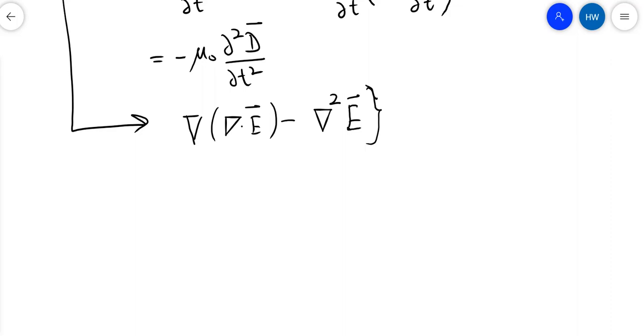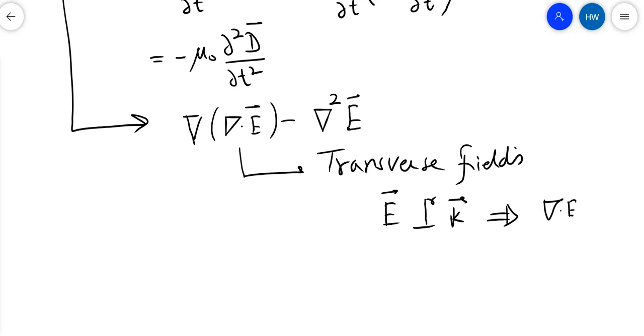Now I make another assumption which is I'm looking at transverse fields. What that means is I'm basically going to focus on fields that are propagating, and I'm looking at essentially homogeneous medium. So the electric field vector is perpendicular to the k vector. If you look at the plane wave basis, you can clearly see that del dot E will bring down a k dot E, and because these are perpendicular, you will see that this implies that my del dot E is actually zero.